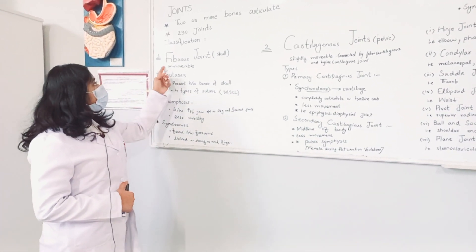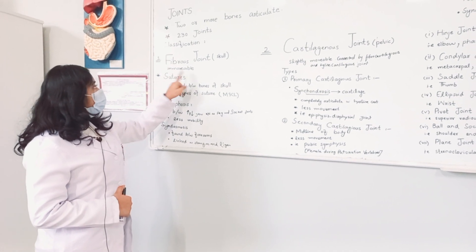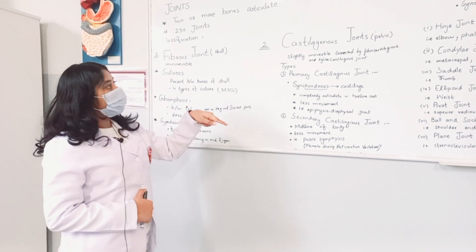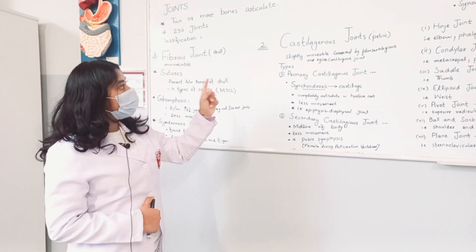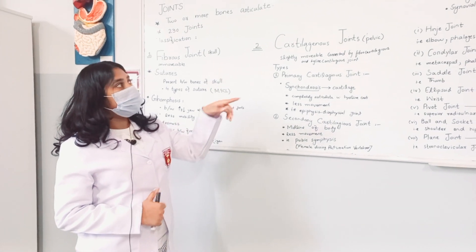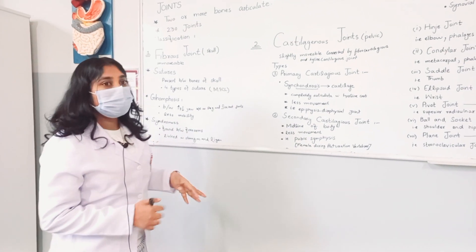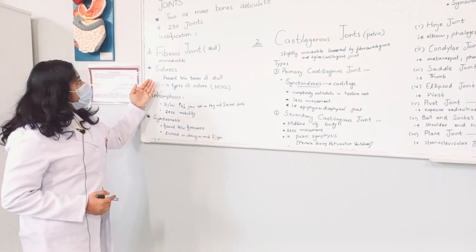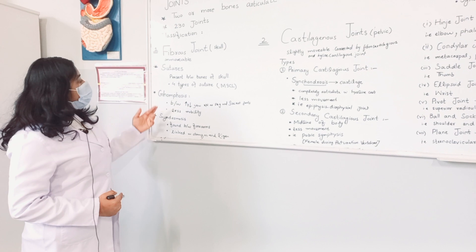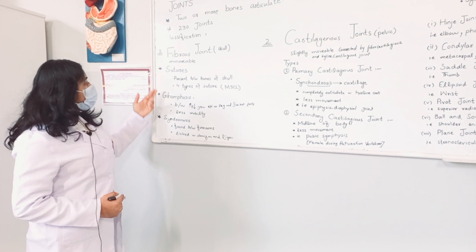Fibrous joints are immovable joints. Cartilaginous joints are slightly movable. Synovial joints are freely movable. First we will look at fibrous joints, which have three types.